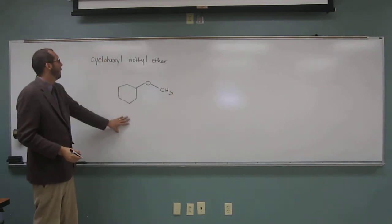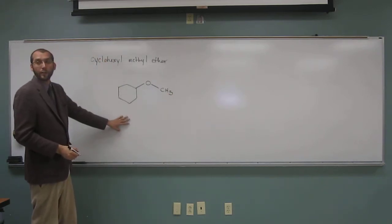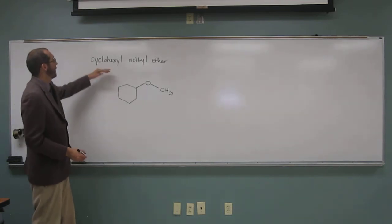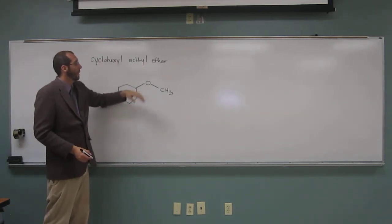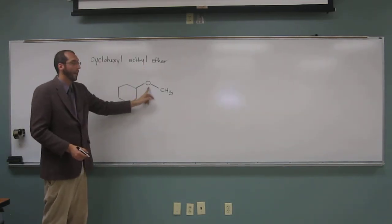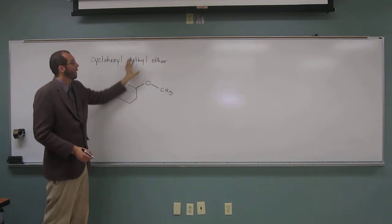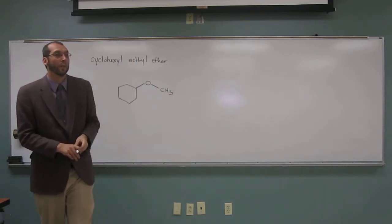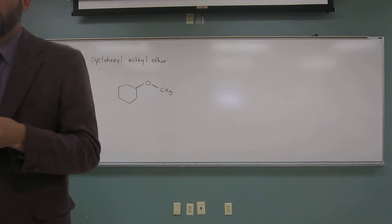So that's how you draw simple ethers. Cyclohexyl methyl ether is saying that attached to the ether oxygen is a cyclohexane ring and a methyl group. Any questions on this one?